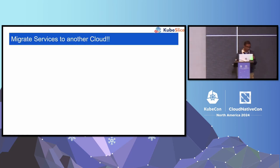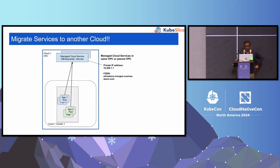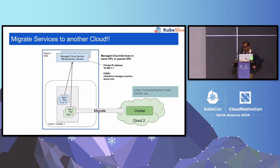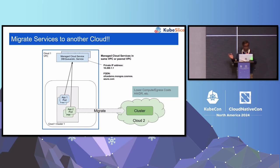In your cloud journey, or Kubernetes journey, there comes a time when you will be asked to do one thing: I want to move some of my services from one cloud, from one cluster, or one or more clusters in the cloud, to another cloud — for whatever the reason. Could it be lower compute, lower egress, HA, DR, governance? A number of reasons you will be asked to move services to another cloud.